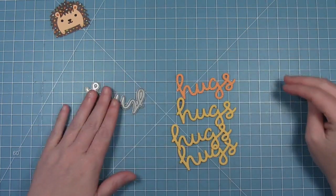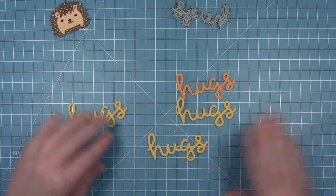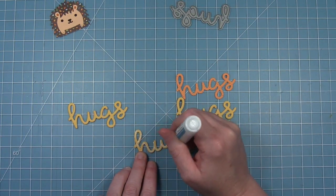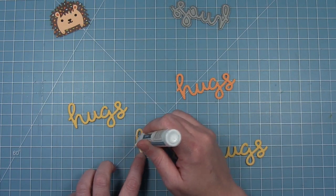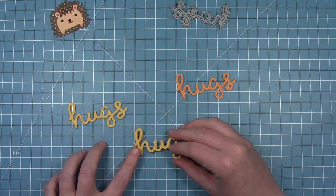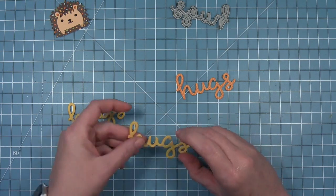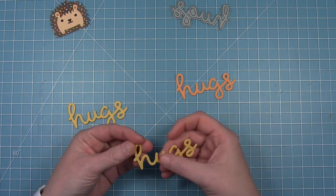Now I've cut some of the scripty hugs. I've cut three out of some sunflower cardstock and I'm just going to stack those to make a really thick sentiment. And then the orange one there is cut from some of the orange pattern paper in the Into the Woods collection and that's going to be my topmost layer.